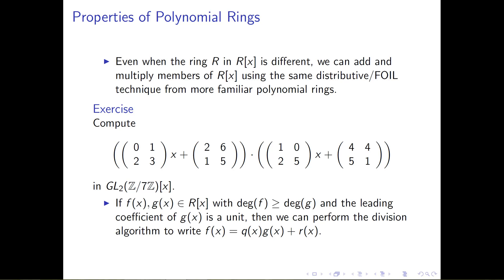The next property I'd like to write down is this: suppose we have polynomials F and G in the general polynomial ring R adjoined X, where the degree of F is greater than or equal to the degree of G. If we know that the leading coefficient of G is a unit, then we can always perform long division and use the division algorithm — also called the quotient-remainder theorem — to write the larger polynomial as a quotient times the smaller polynomial plus a remainder, where the degree of the remainder is strictly less than the degree of G, the thing you're dividing by.